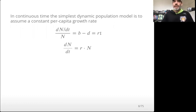If our simplest possible model per capita growth rate is constant, I'll multiply both sides by N, so we get this differential equation dN/dt equals that per capita growth rate r times N, the population size.